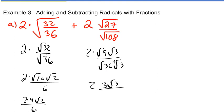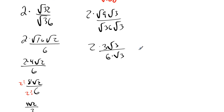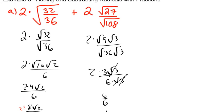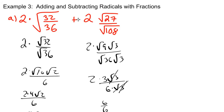Look at this — the radicals cancel! There's a radical 3 on top and a radical 3 on the bottom, so those are gone. And 2 times 3 is 6 over 6, which is just 1. So the right side simplifies to 1.